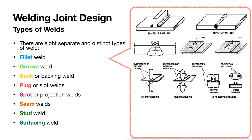Amongst the two main types of weld, fillet welds are those that are placed in a corner formed by two mating work pieces, whereas, as the name implies, groove welds are those that are placed in the grooves.